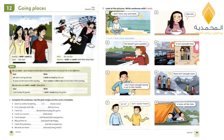Let us move to the explanation. We use wish plus past simple to talk about a situation that we would like to be different. So it is something imaginary, and the fact is different. Look at the example: we don't live by the sea — the wish is: I wish we lived by the sea. We changed the tense. Number two: it rains all the time in this country — Mom wishes it didn't rain all the time. We can also use wish plus could plus base form. The fact is: I can't play the guitar. The wish is: I wish I could play the guitar. In wish we use wish plus past simple, or wish plus could followed by base form.